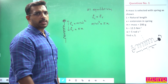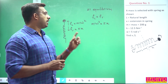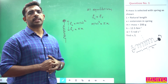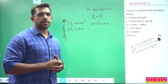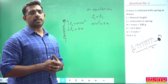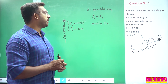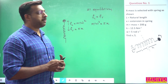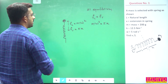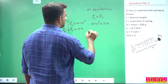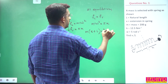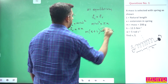The concept is that the spring force is developed by the centrifugal force. At equilibrium, fc equals fr. So m·r·ω² = k·x. Here r is the extension plus the natural length, so m·(x + L)·ω² = k·x.